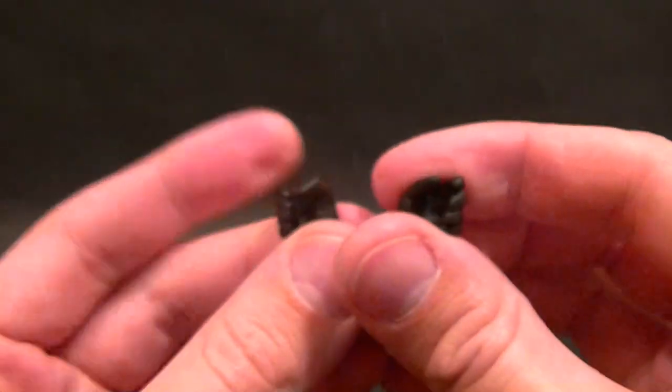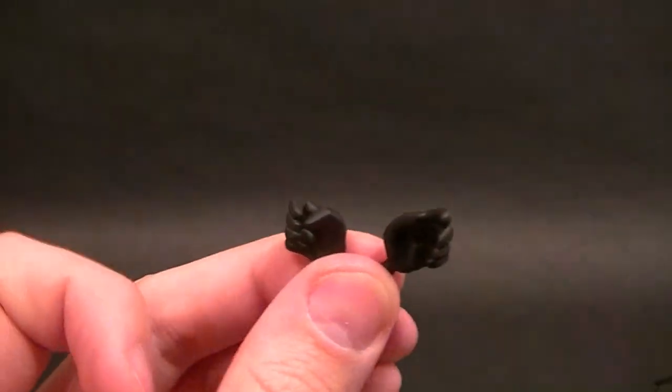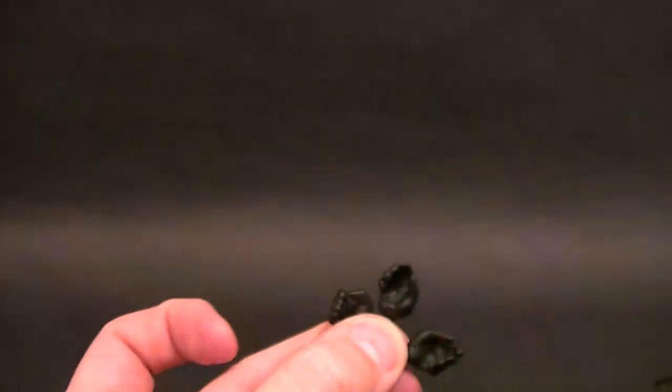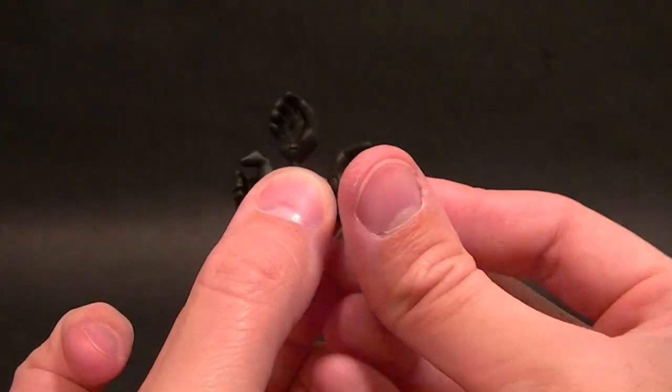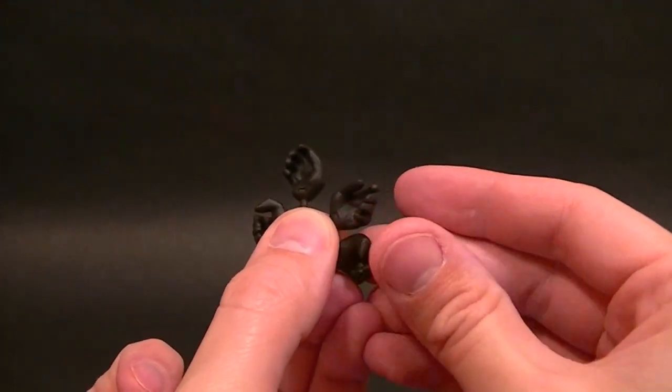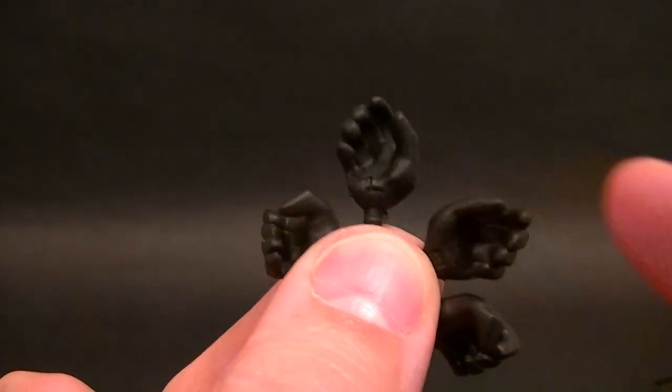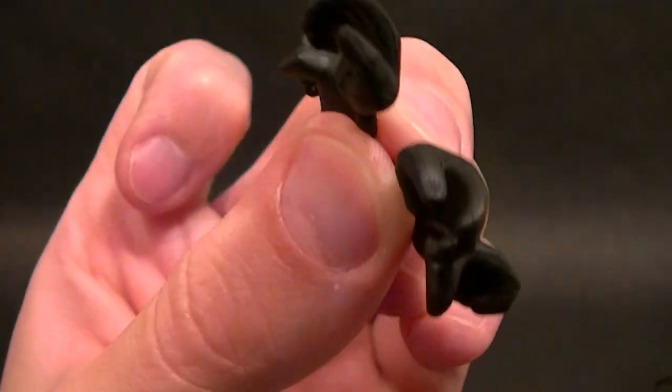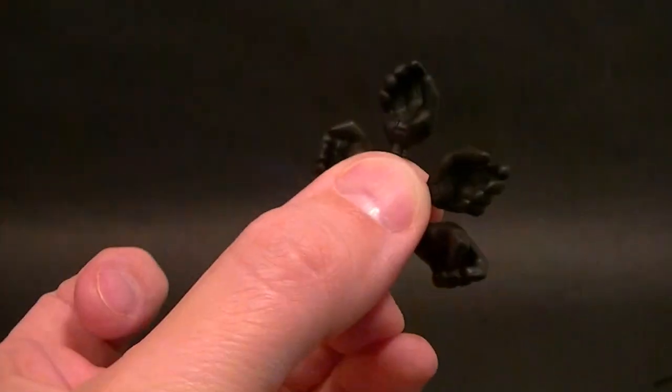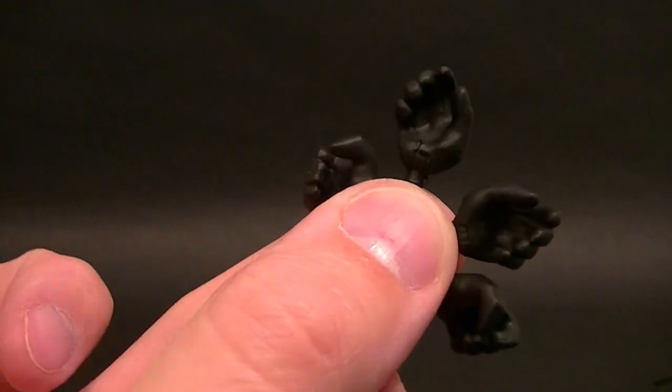So we have the fists, then we have two gripping hands for either side, the more loose grip and then the tighter grip. So you can pose them however you want to with those.